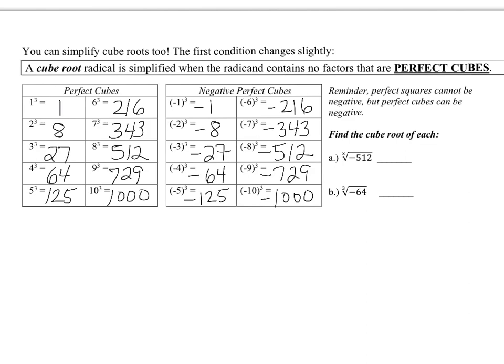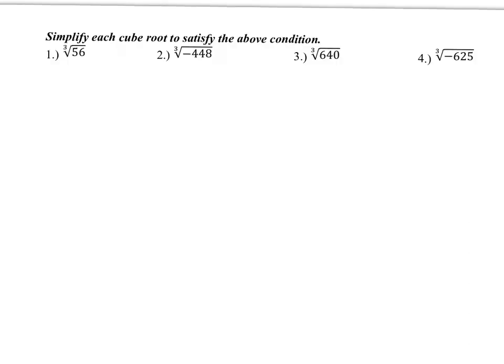Double check to make sure you've got your perfect cubes correct. You may not have realized that negative perfect squares don't exist, but perfect cubes can be negative because we're multiplying the negative three times. So anytime you have an odd power, you can get a result with a negative answer. If I ask you to find the cube root of negative 512, well, since negative 8 cubed is negative 512, the cube root of negative 512 is just negative 8. If I ask for the cube root of negative 64, what number to the third power gives me negative 64? That's just negative 4. Anytime you're asked to find a cube root of a negative number, the result is negative.